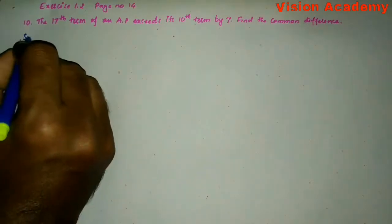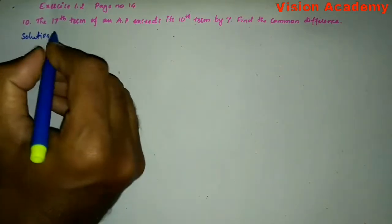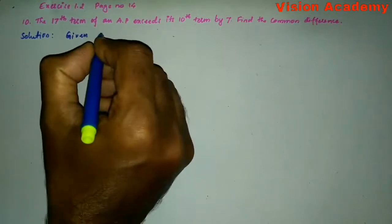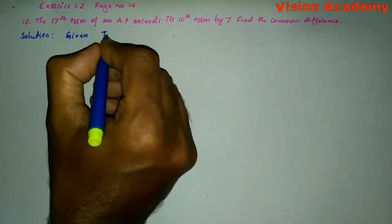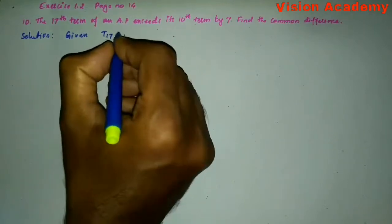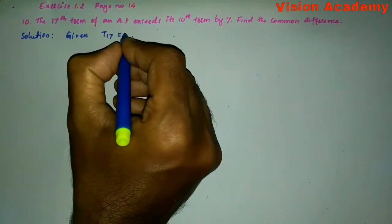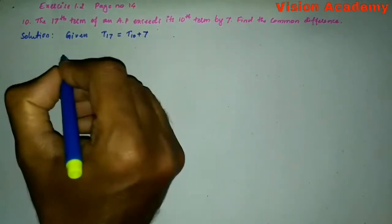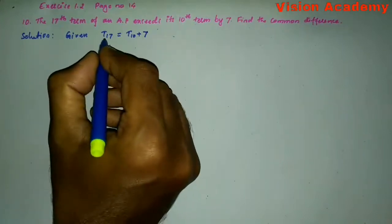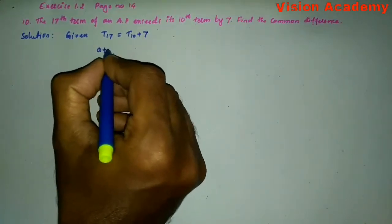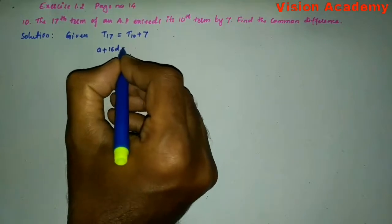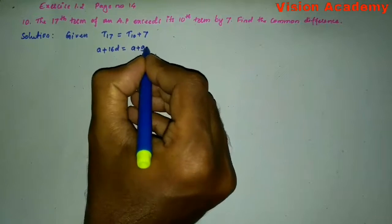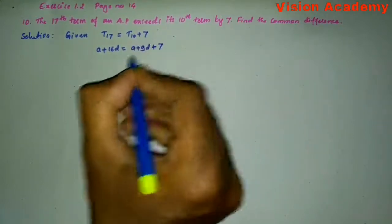Let us find the solution for the given problem. Given: T17 exceeds T10 by 7. T17 can also be written as A plus 16D equal to T10 can also be written as A plus 9D plus 7.